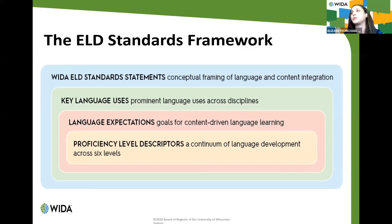Moving inward in the nested graphic toward greater specificity, we have key language uses — prominent language uses across disciplines. The four key language uses are narrate, explain, inform, and argue. These were developed through a wide review of academic standards, existing language development standards, and literature, identifying the language demands placed on students. These four high-leverage genre families recur across all grade levels and disciplines regardless of age or content area, making them the primary organizational feature of the 2020 edition.